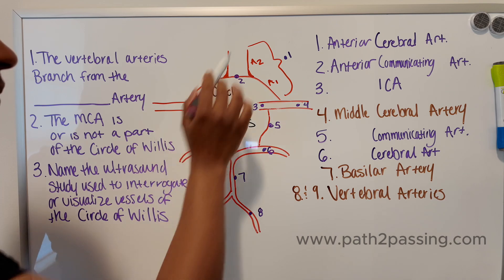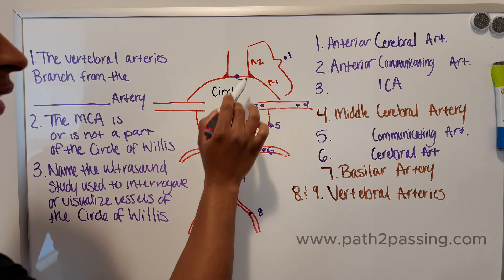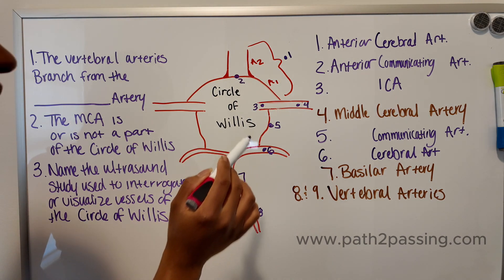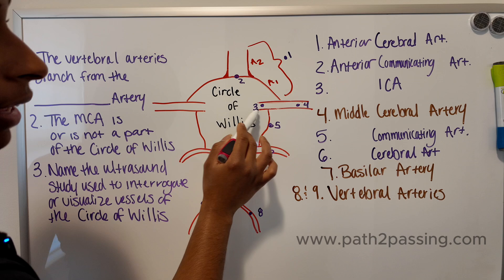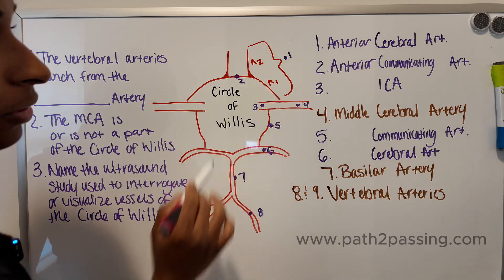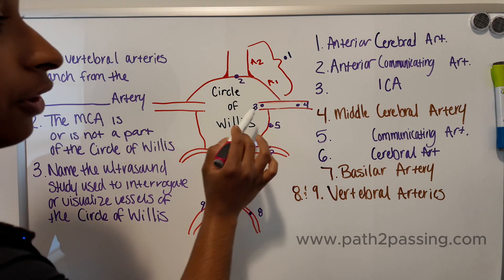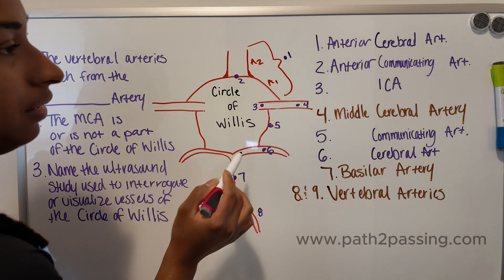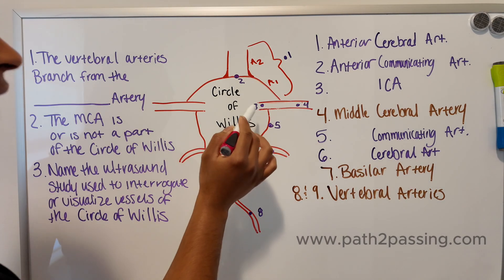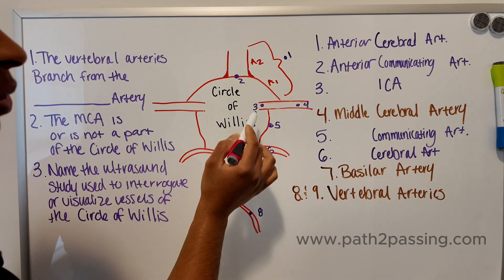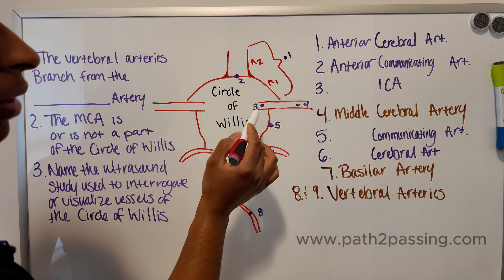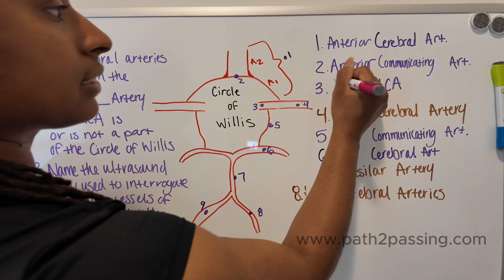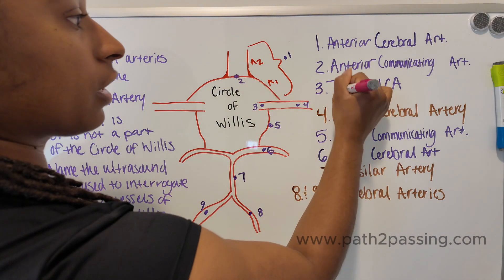So you have your anterior cerebral artery and your anterior communicating artery. Now we're going to plug in vessel number three, and that is going to be your internal carotid artery — specifically, this is going to be the terminal end of the ICA.